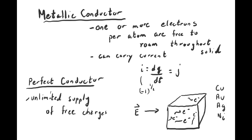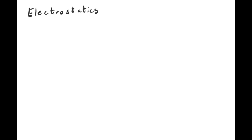Perfect conductors don't exist, but metallic conductors do. The supply of free charges is not infinite or unlimited — it's nice to talk about perfect conductors, but they are an approximation. Let us focus on what happens if you apply the ideas of electrostatics to ideal conductors.